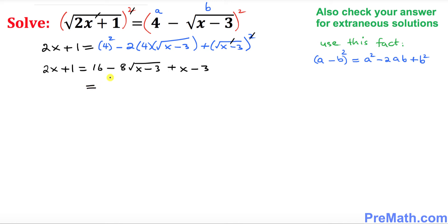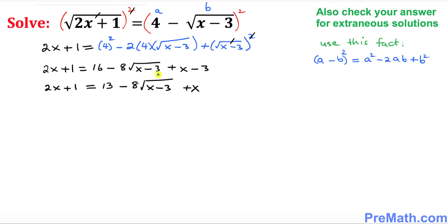Now we simplify the right hand side. We combine like terms: 16 minus 3 is 13, so we have 13 minus 8 times the square root of (x minus 3) plus x, while the left hand side is 2x plus 1. Next we want to isolate the radical part — the square root of (x minus 3).